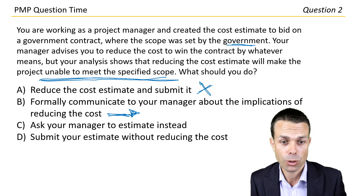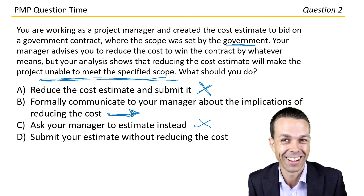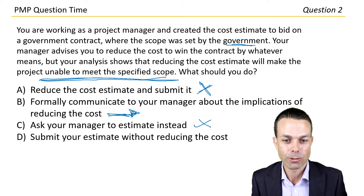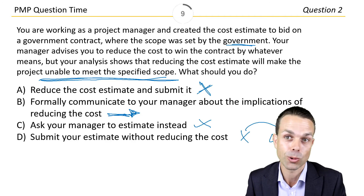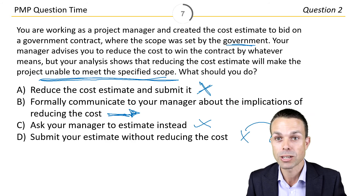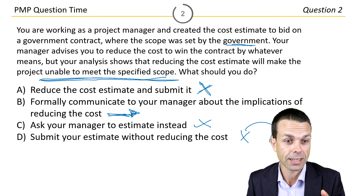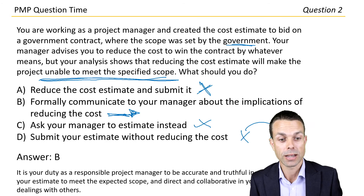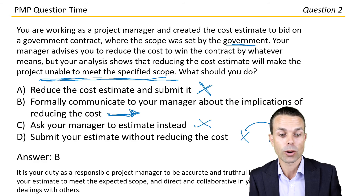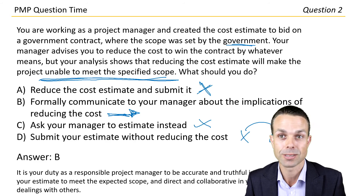Formally communicate to your manager about the implications of reducing the cost — that's a very good option because we want to be open and transparent, direct and collaborative, making sure that everyone is on the same page. Reducing the estimate would end in tears; asking your manager to estimate instead won't go down well; submitting without reducing leaves you in a no-win situation. Let's go with letter B. It's your duty as a responsible project manager to be accurate and truthful in your estimate and to be direct and collaborative in your dealings with others.